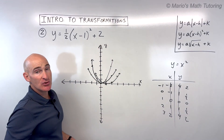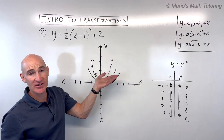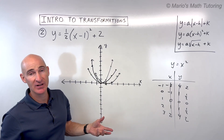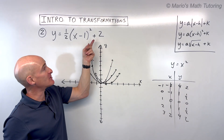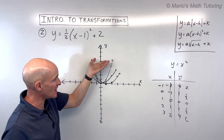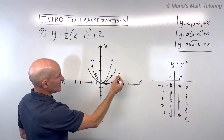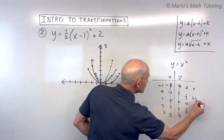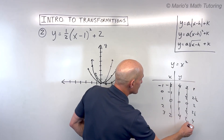Lastly, the plus two — it's not grouped with the x, so it affects the y values. The vertical direction, and it's addition, so it's a shift. The plus two is going to shift it up two. Remember, if it's grouped with the x, it's the opposite; not grouped with the x, it has the same effect. So plus two means up two. We can add two to all of our y values — that gives us four, two and a half, two, two and a half, four.